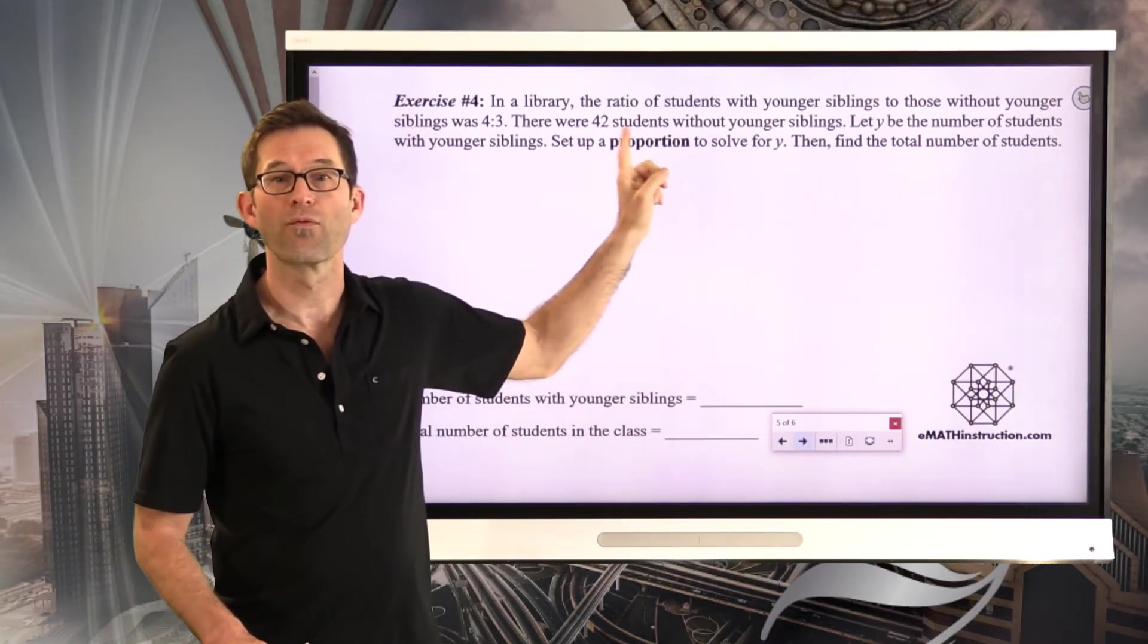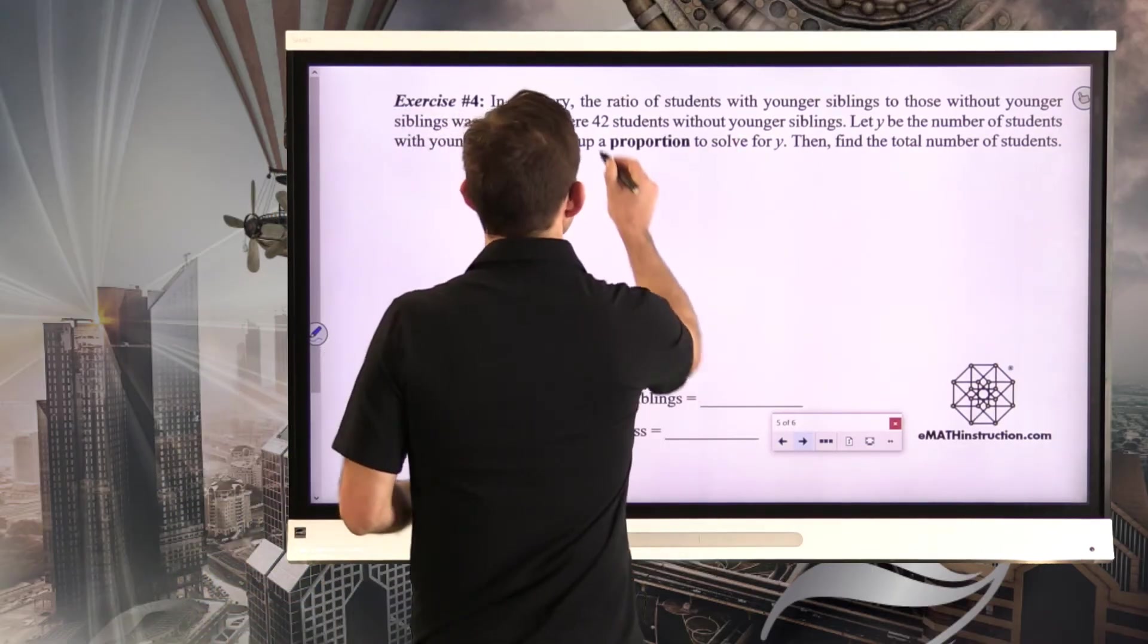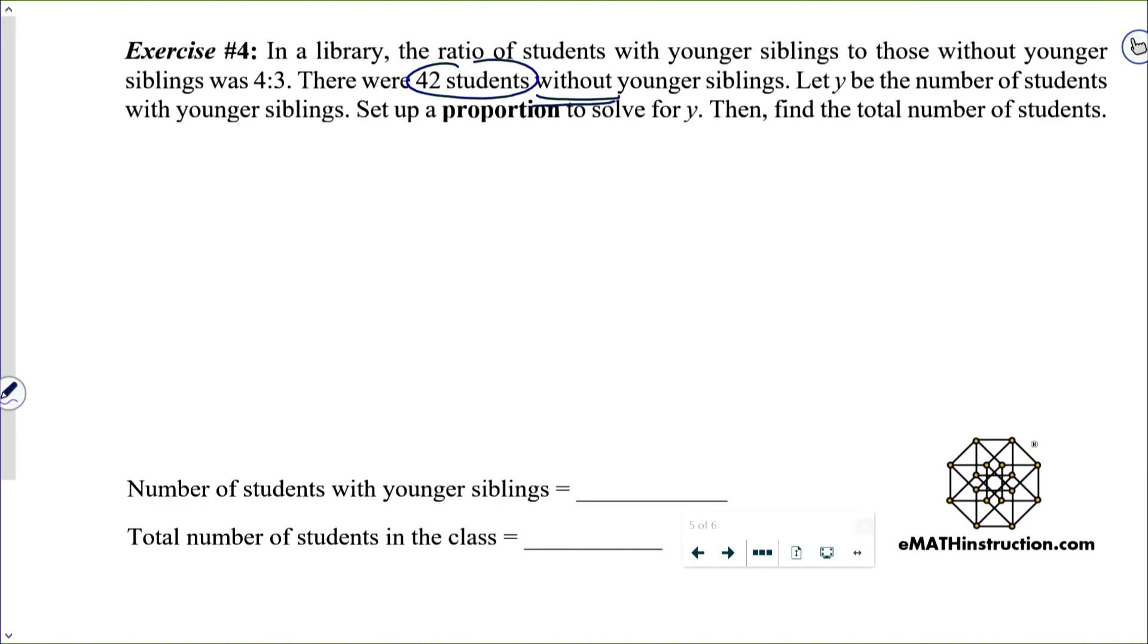So what does that 4 to 3 ratio represent? That's students with younger siblings to those without younger siblings. And of course, you could have a lot of kids without younger siblings for one of two reasons. They could simply be only children, so they don't have any siblings at all. And you could also have kids who simply are the youngest sibling, so they don't have anyone younger than them. So anyway, those with younger siblings to those without younger siblings, 4 to 3. Then we're told there are 42 students without. Exceptionally important. Without.